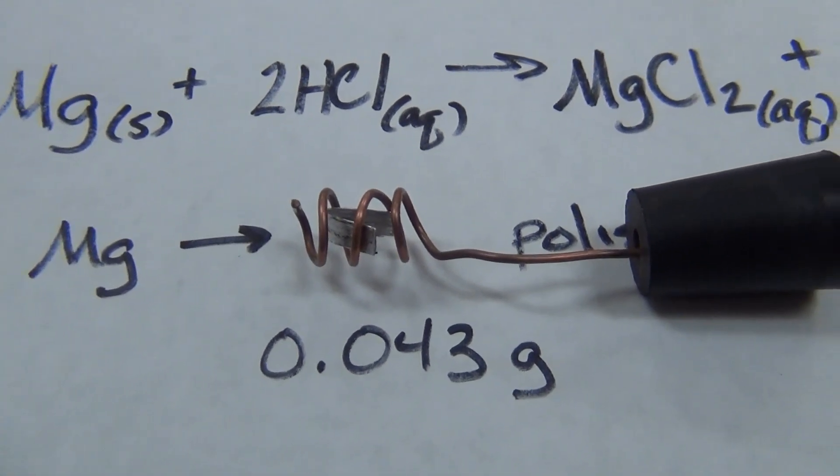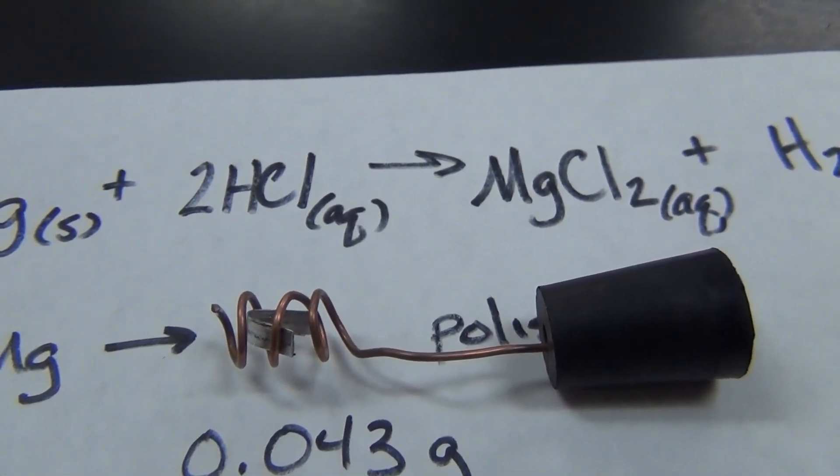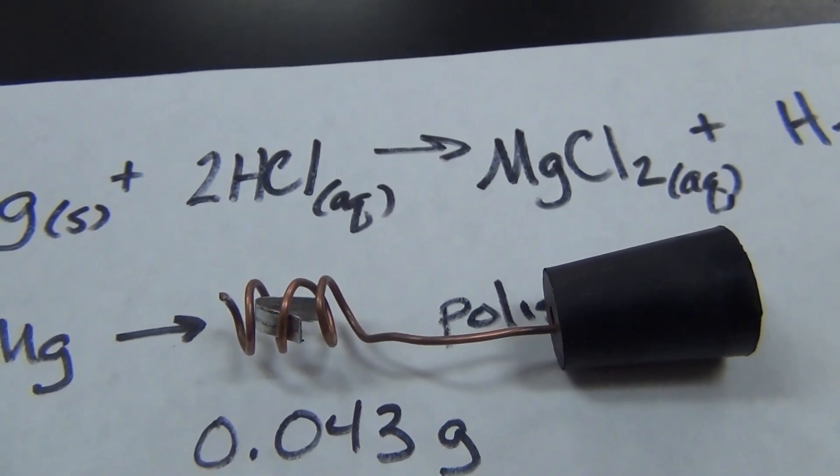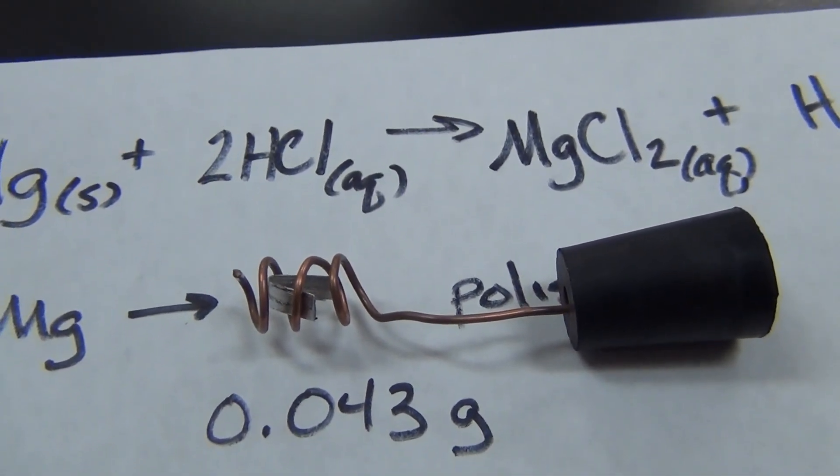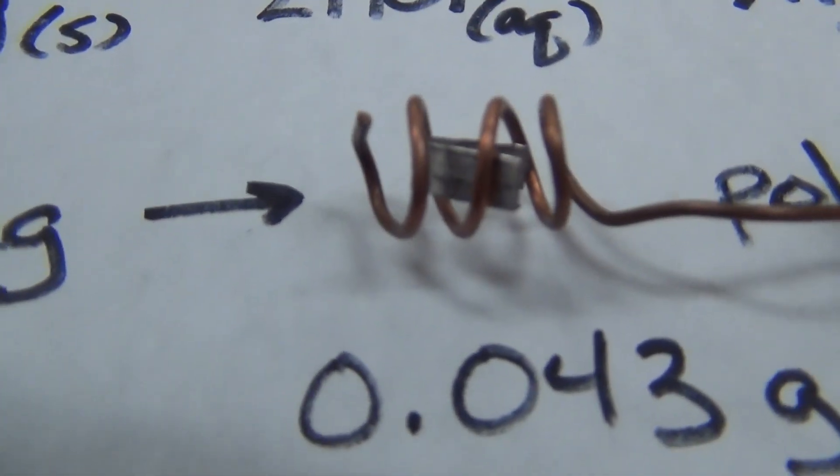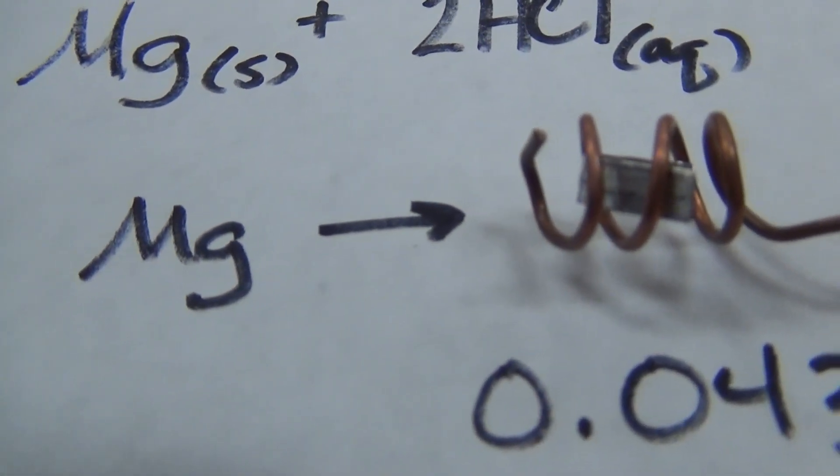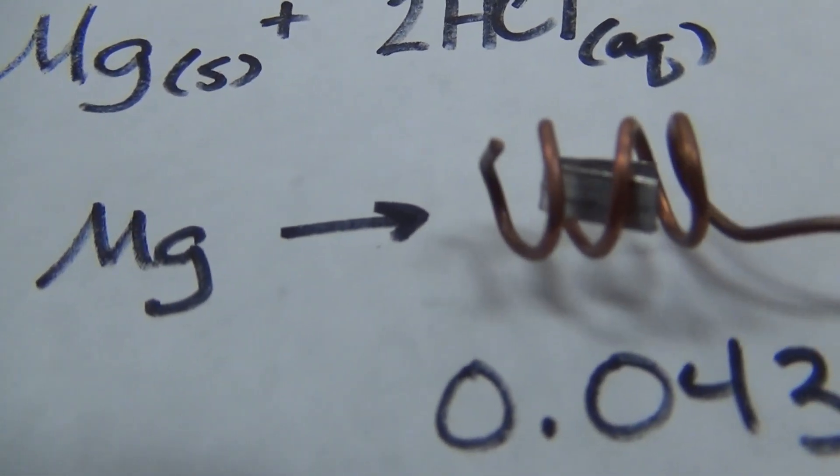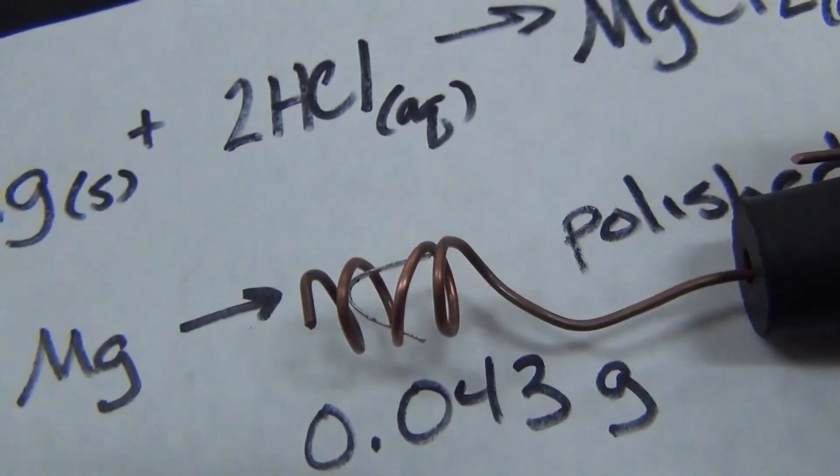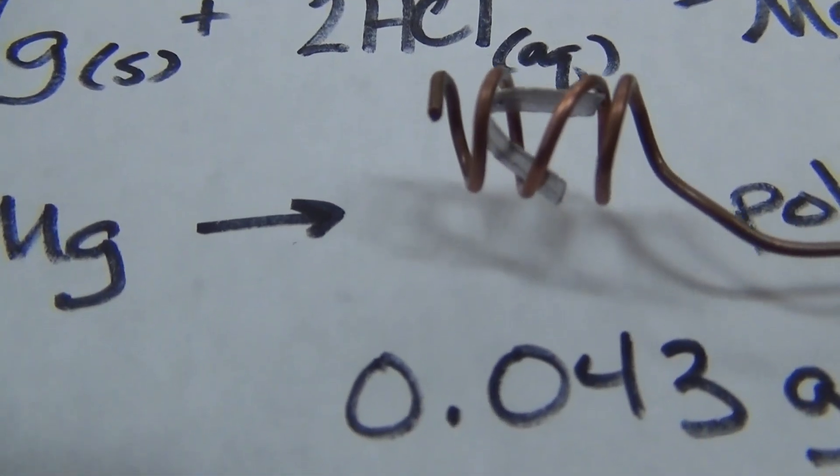So in order to do this reaction, I need to be able to keep this in the measuring device. So I made a little cage out of some copper wire because copper does not react with hydrochloric acid and the magnesium will. And you can see the magnesium strip. I've just bent it over into a little U shape. And the magnesium strip is stuck up into the cage.